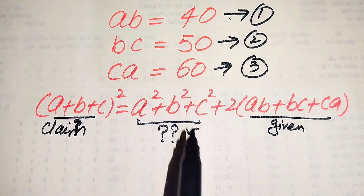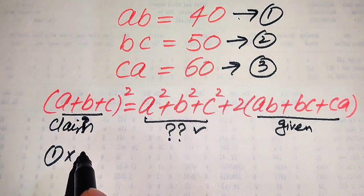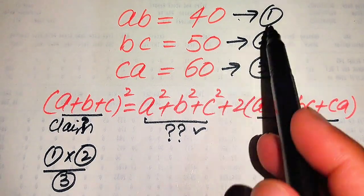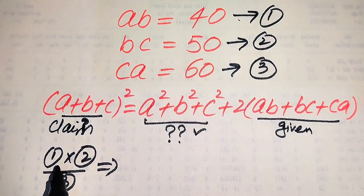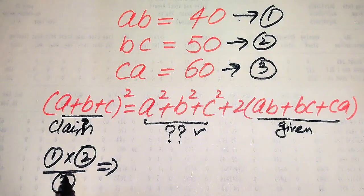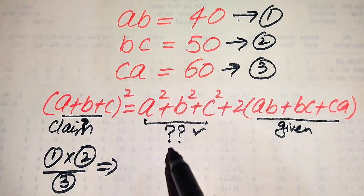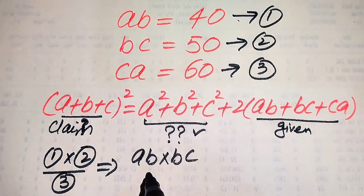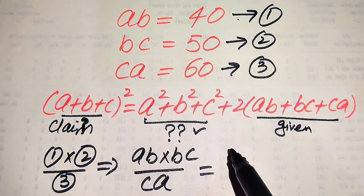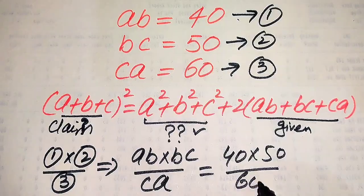In order to find these squares, we do the following steps. First, we multiply equation number 1 with equation number 2, and divide by equation number 3. We multiply the left-hand sides of equations 1 and 2: that gives AB multiplied by BC, divided by CA, equals the right-hand sides: 40 multiplied by 50, divided by 60.